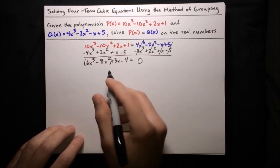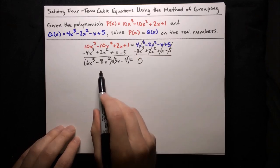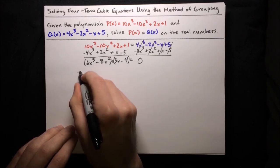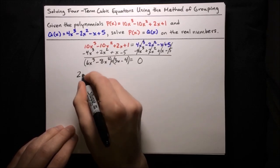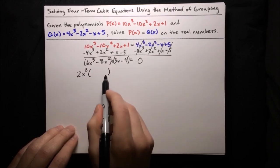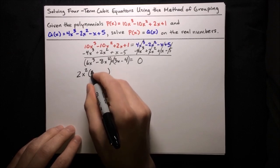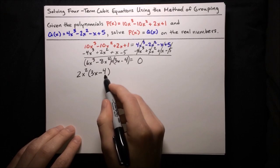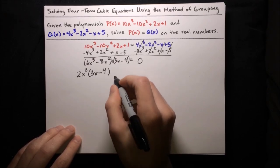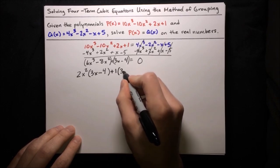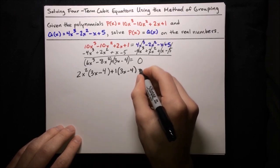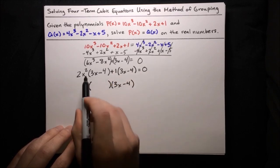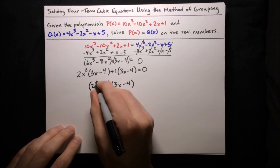Now we're in a situation just like last time — a polynomial equal to 0 — and we can try to solve this by grouping. Let's group the two highest-degree terms and the two lowest-degree terms. For 6x cubed minus 8x squared: 6 and 8 are both even and both terms have x squared, so factor out 2x squared, giving 2x squared times 3x minus 4. For the remaining terms 3x minus 4, we factor out 1 times 3x minus 4. We have a common binomial factor 3x minus 4, so factoring it out gives 3x minus 4 times 2x squared plus 1.